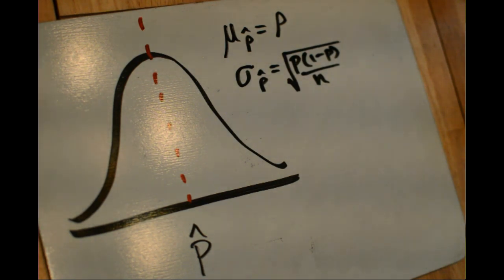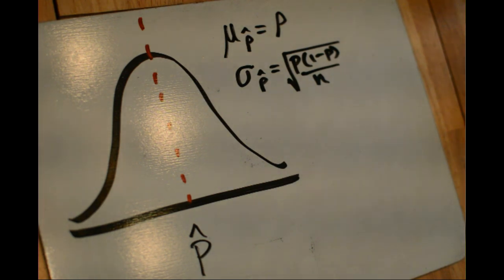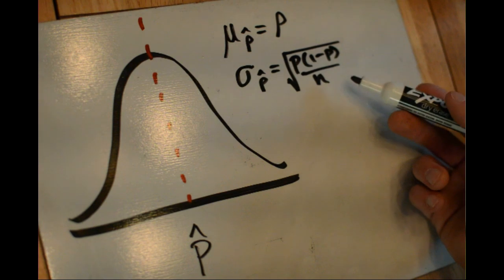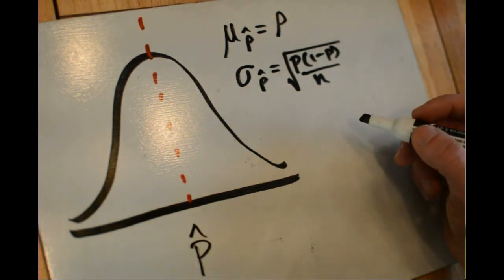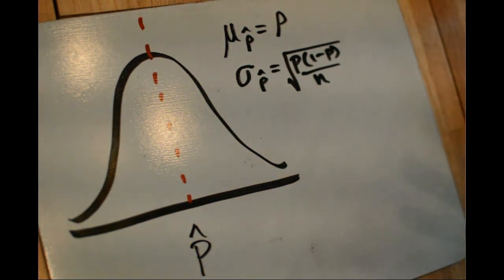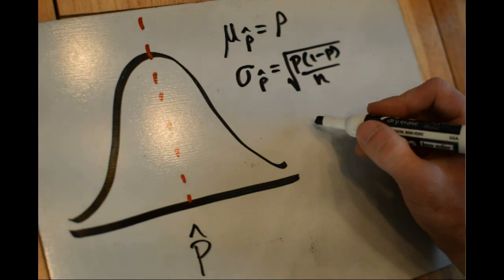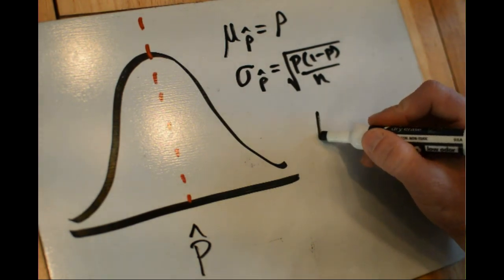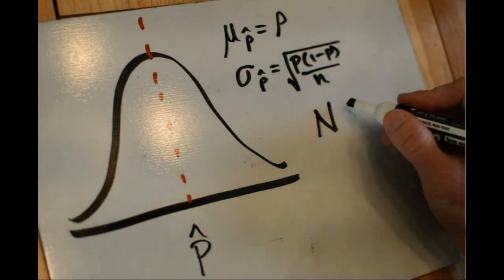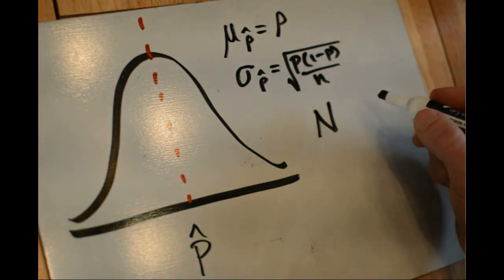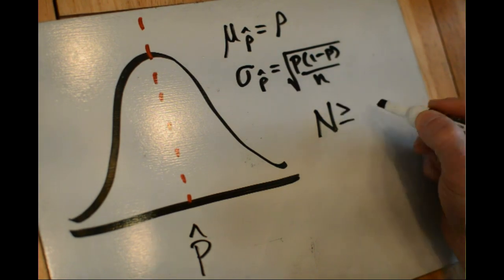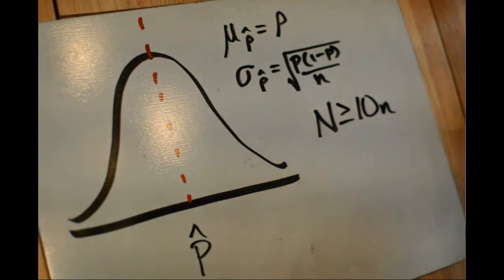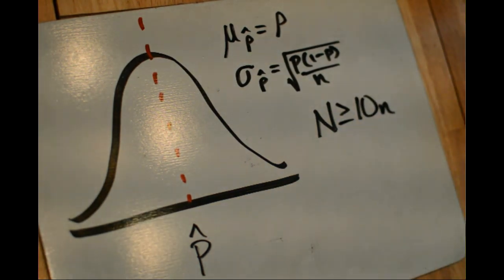There are two important rules of thumb to know whenever we're going to be using a sampling distribution of p-hat. Rule of thumb number one is that we can only really use this as long as the population is sufficiently large. In general, we say that capital N, the population, would have to be at least 10 times the sample size — greater than or equal to 10 times n.